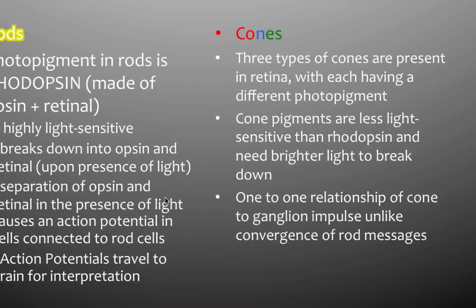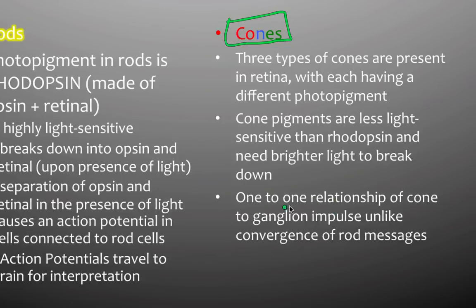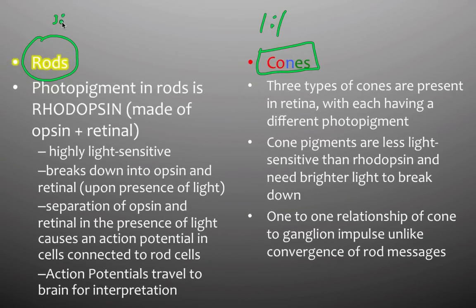Cones are specialized for various types of light. We have red, blue, and green cones, each responding very specifically to a different photo pigment. Cones are less light sensitive than rhodopsin in the rods and need brighter light to break down their photo pigments. However, the acuity — the precision — of cones is much higher than that of rods. Every cone is innervated by one ganglion cell, whereas rods usually share one ganglion cell among several rods. This one-to-one ratio for cones versus a many-to-one ratio for rods explains the higher acuity of cone-based vision.